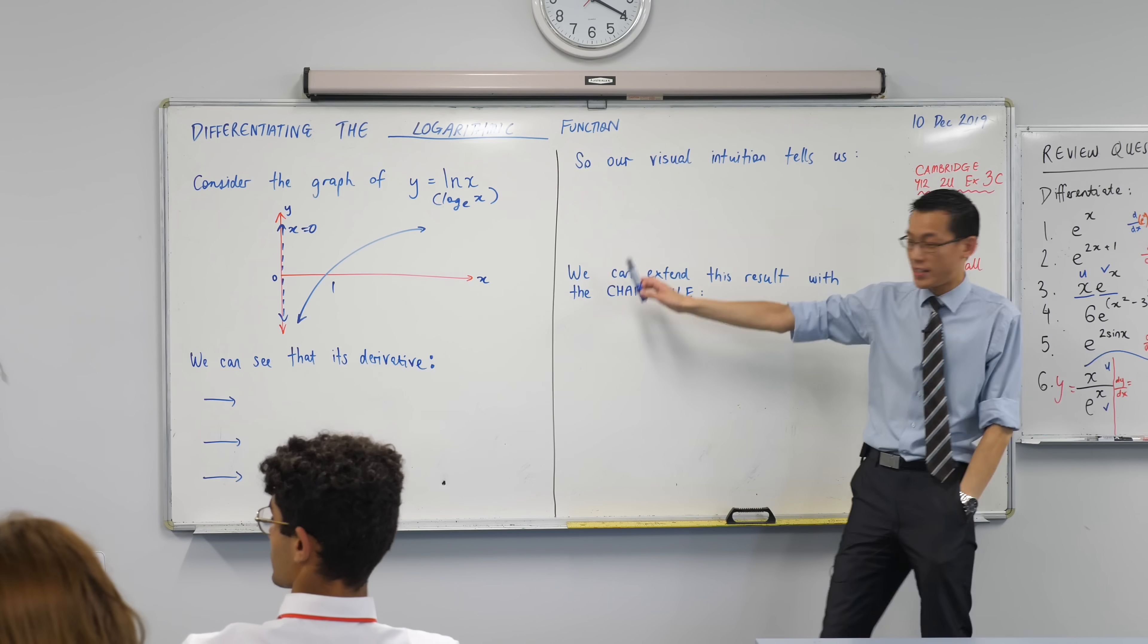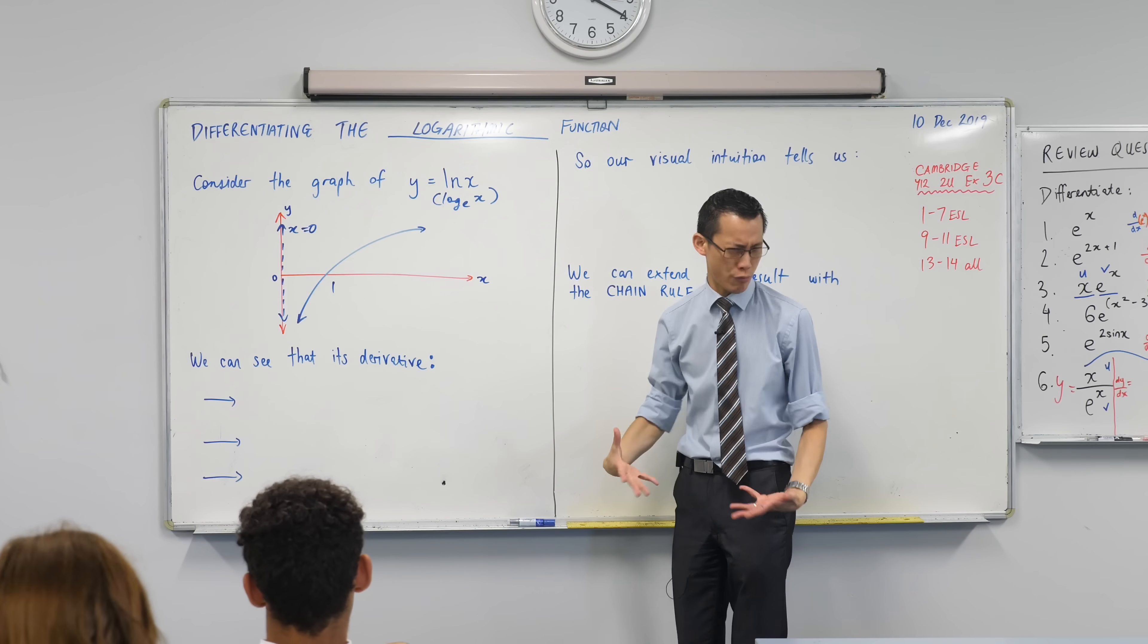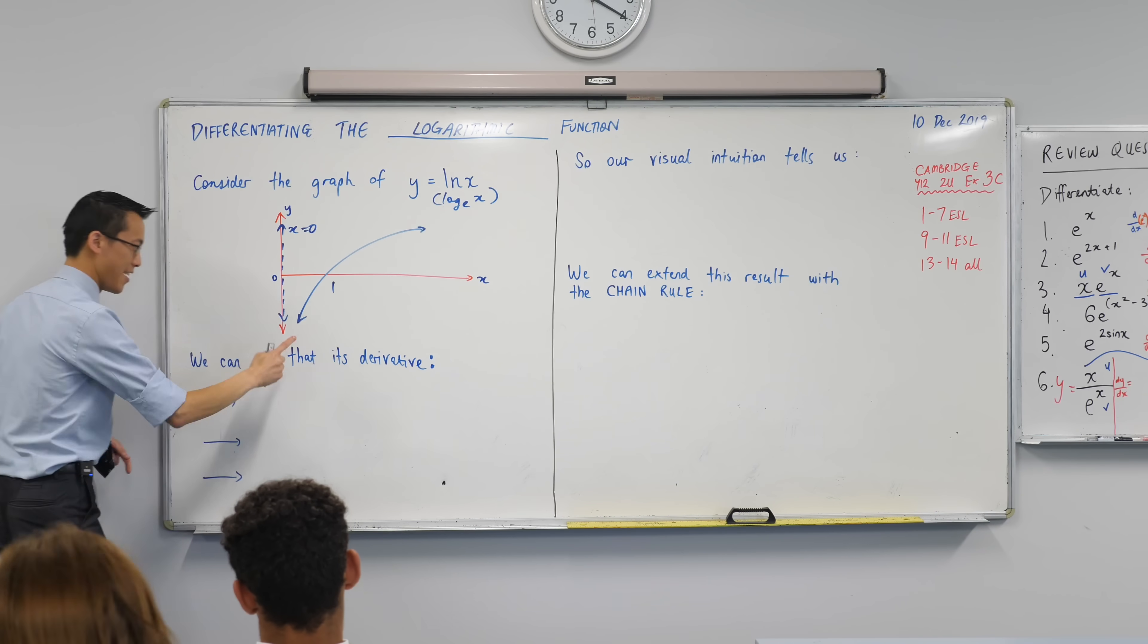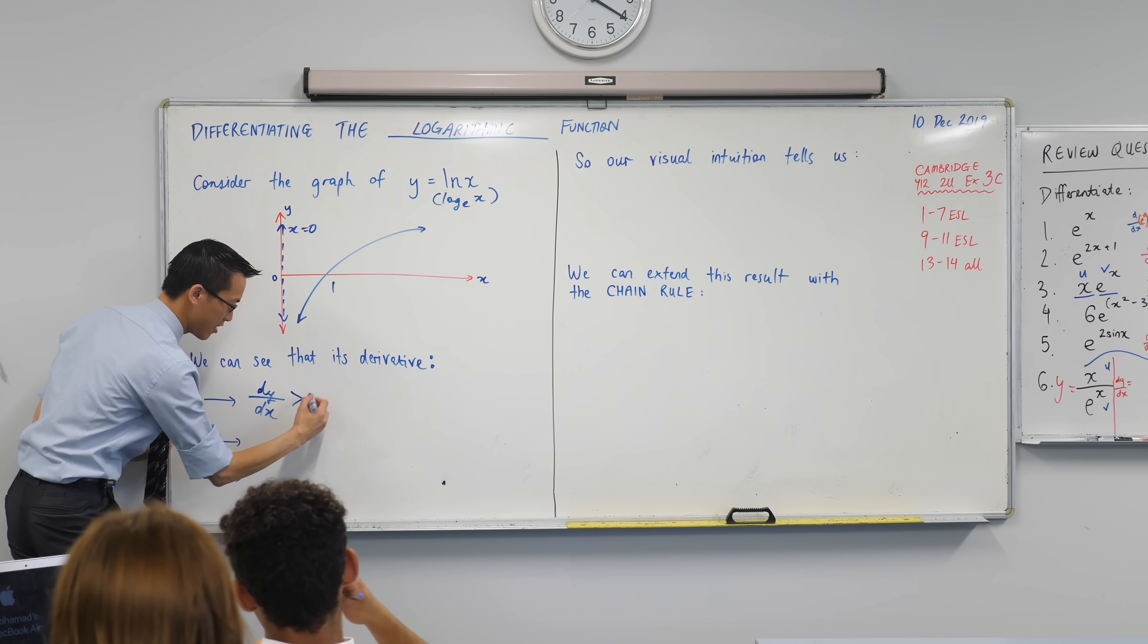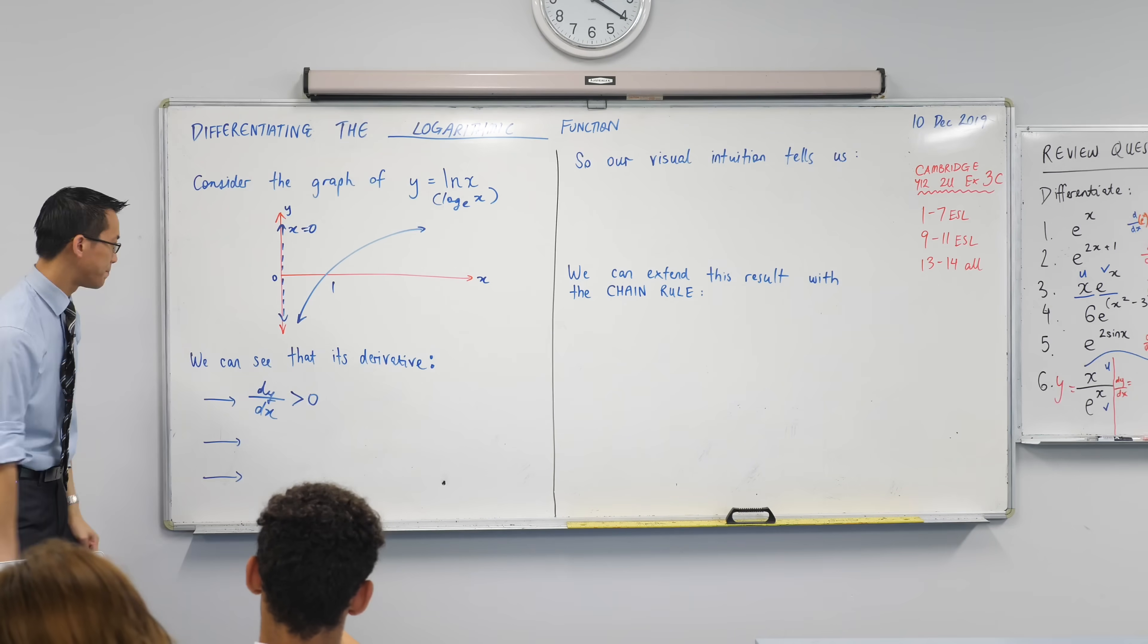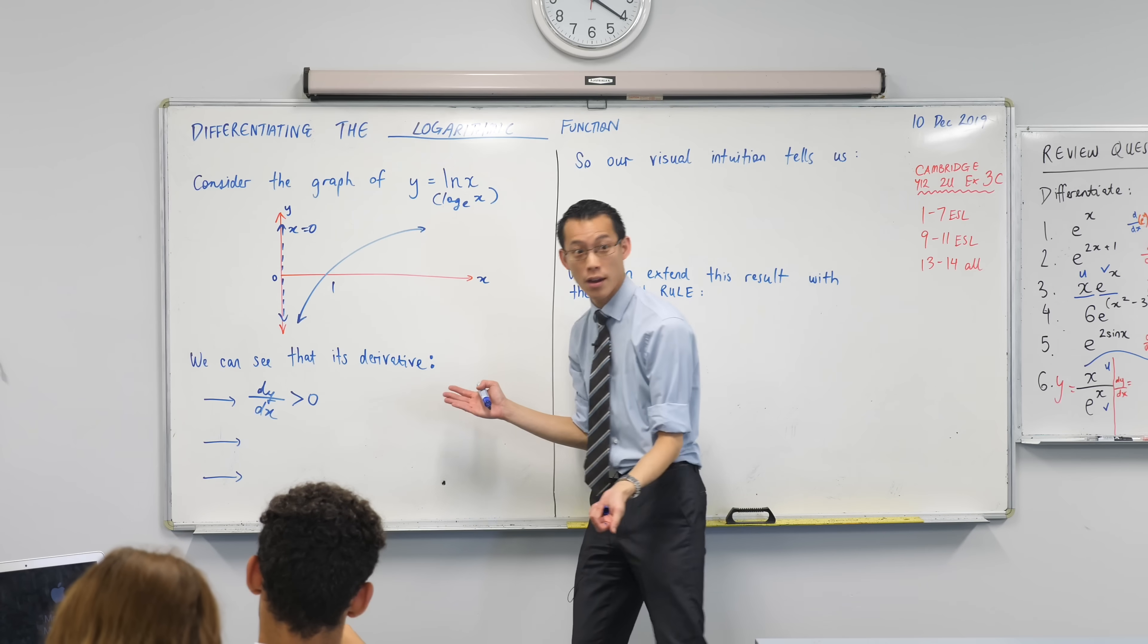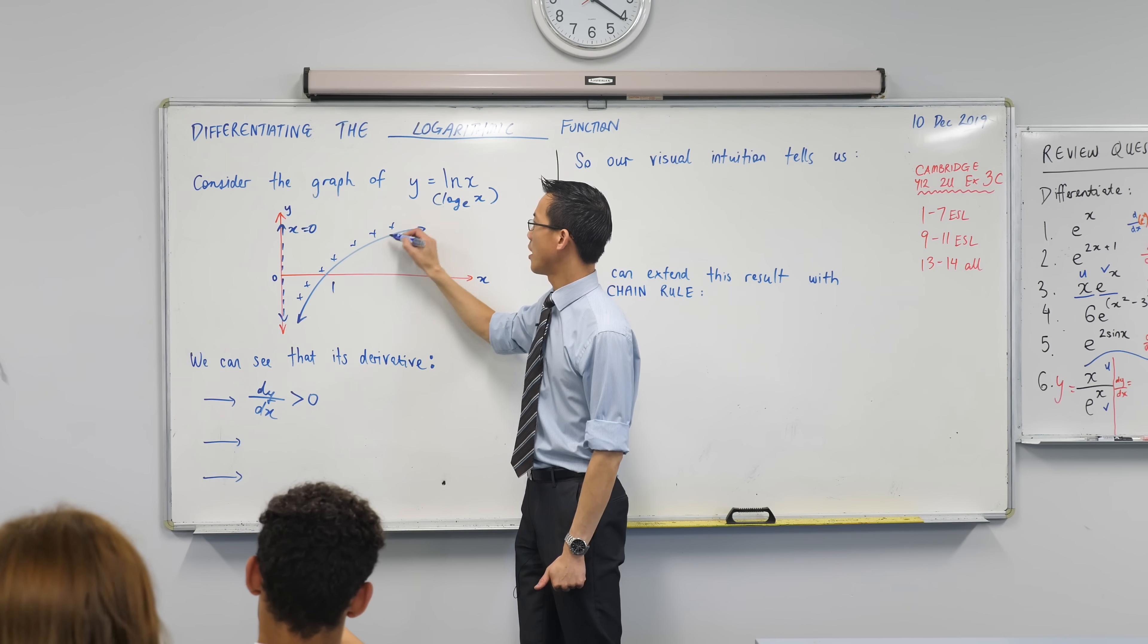Now on the basis of just that very simple picture there's at least three things that we can see about the derivative of this graph. The derivative tells us about the gradient. Here's our first thing. The log curve is increasing which means that the derivative is positive. The derivative is positive so if y equals log x, dy dx is going to be greater than zero. It's positive and it always is positive. It never turns around, it never stops, it is always going to be going up.